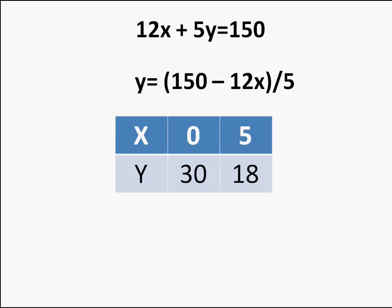Now we take different values of x. Say x equal to 0, then y equal to 150 by 5 which is equal to 30. x equal to 5, then y equal to 150 minus 2 into 5 by 5, which is equal to 150 minus 60 which is 90 by 5 which is equal to 18.